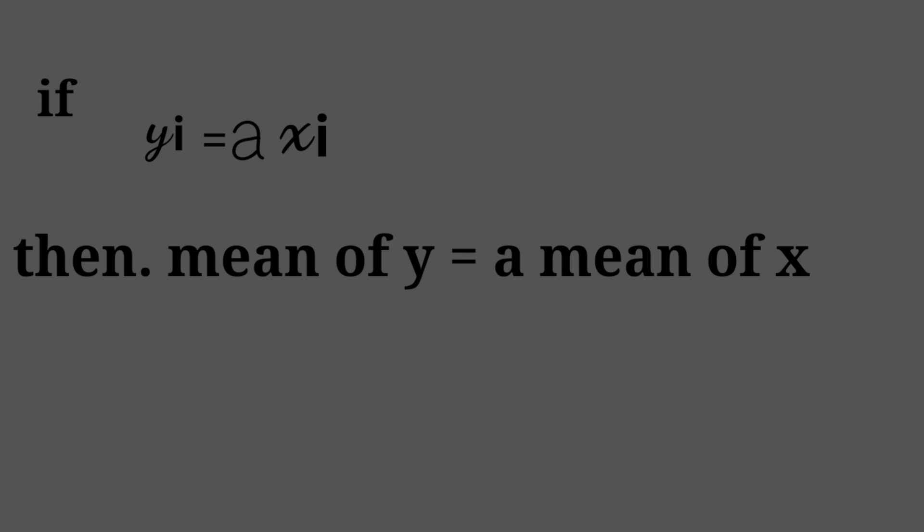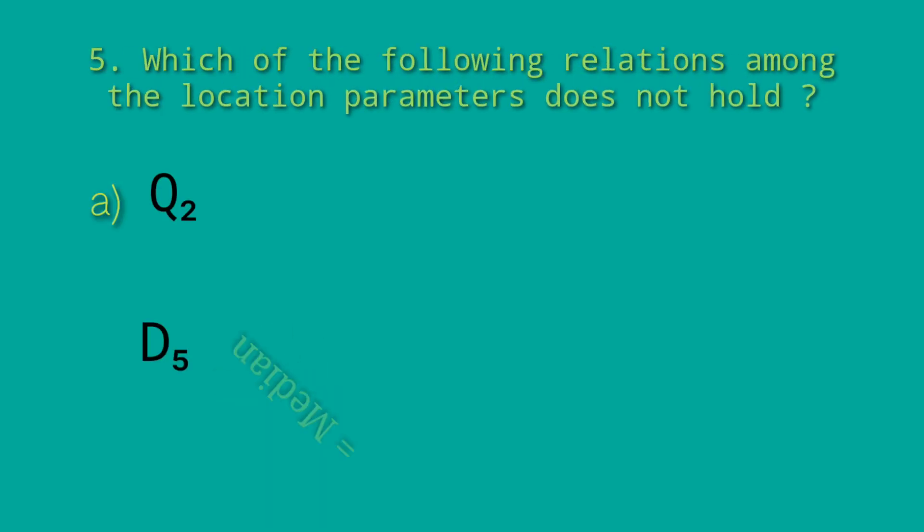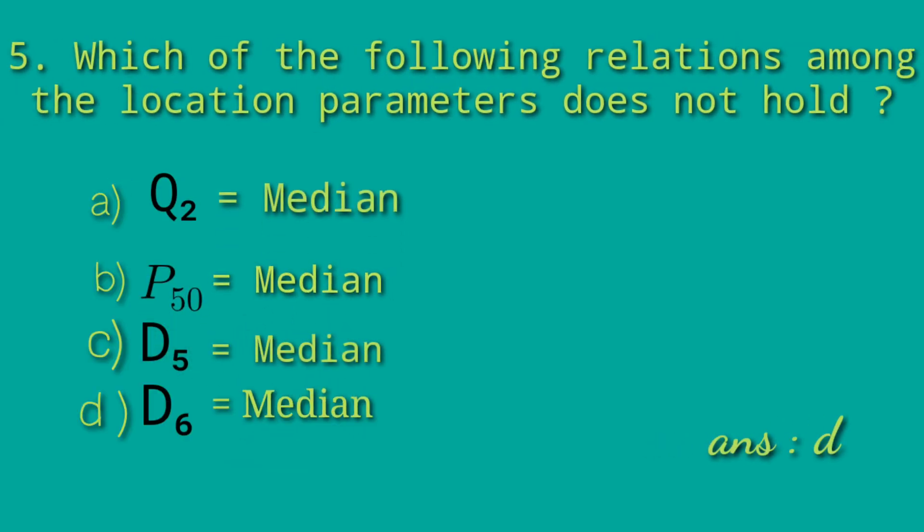Last question: Which of the following relations among the location parameters does not hold? Option A: Q2 equals median, Option B: P50 equals median, Option C: D5 equals median, Option D: D6 equals median.